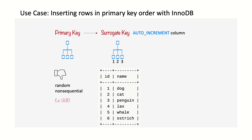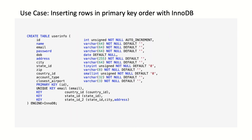For example, using UUID values is a poor choice from a performance standpoint because it makes clustered index insertion random, which is the worst case scenario and doesn't give you any helpful data clustering. To demonstrate, we'll benchmark two cases. We'll create two identical tables except for the type of the primary key. The first table called UserInfo has an integer ID as primary key with auto-increment. The second table named UserInfo_UUID is identical except that the primary key is a UUID column instead of an integer.